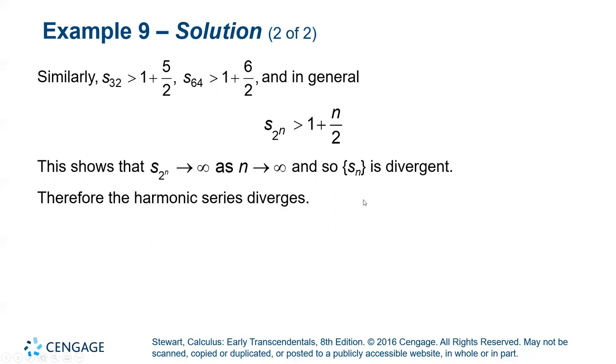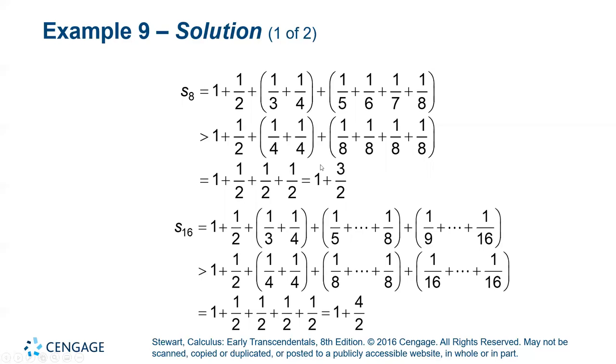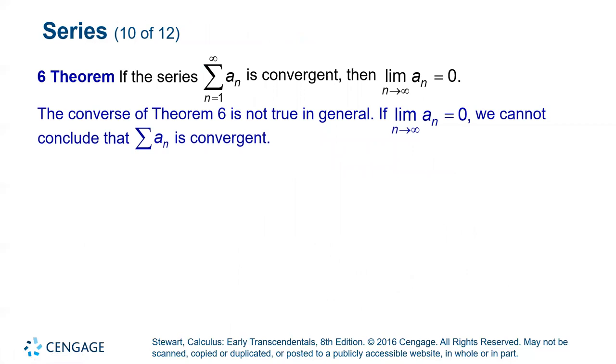So the harmonic series diverges. This one is really interesting because when you first look at the question, it seems like this should definitely converge. But we can pretty quickly show that no matter what partial sum we're working on, it continues to grow.